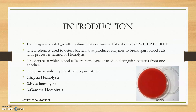The degree to which blood cells are hemolyzed — that is, the extent to which hemolysin breaks the blood cells — is used to distinguish bacteria from one another. How much a bacterial toxin can break RBCs is the factor used to distinguish bacteria. They produce many patterns of hemolysis. The main three patterns are alpha hemolysis, beta hemolysis, and gamma hemolysis.